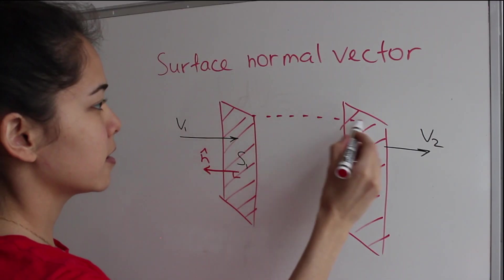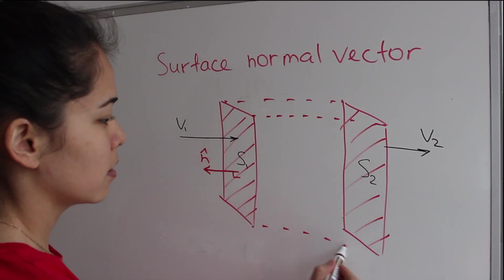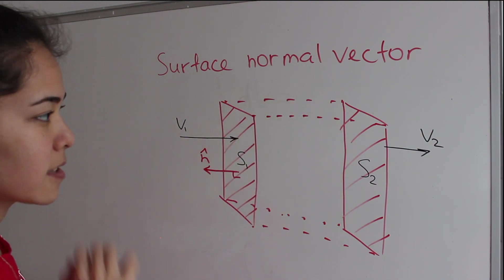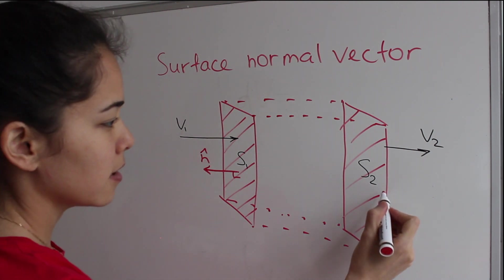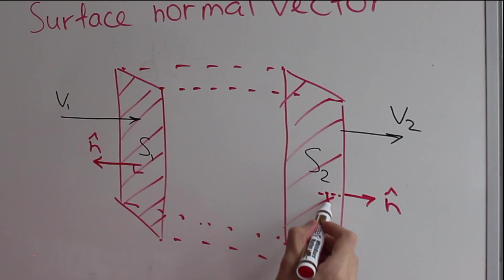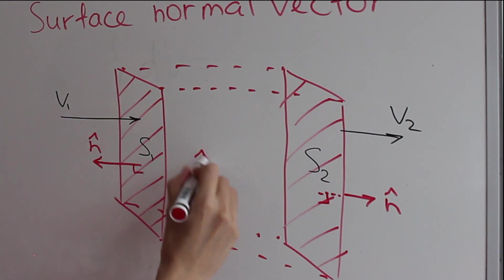So let's say we connected these. The inside is our control volume. So a normal vector points outward here and outward here, and of course it's perpendicular, and the magnitude of n hat is 1.